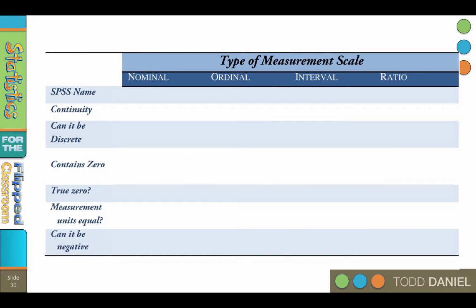Ratio data are quantitative in nature and are continuous data. Let's review the qualities for these measurement scales. SPSS calls nominal and ordinal data nominal and ordinal in a column labeled measure. SPSS calls both interval and ratio data scale data. This means you will not need to distinguish between interval and ratio, only that you have interval or ratio as opposed to nominal or ordinal.